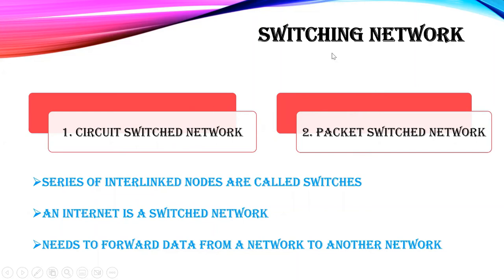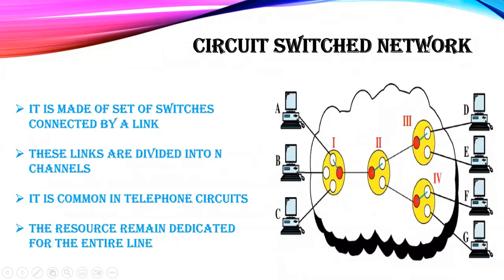In a circuit switched network, two ends of the system are connected through a circuit. There are four switches forming a node, which is further divided into different channels. The best example of a circuit switched network is the telephone network — a telephone hub connects n number of houses, and communication is delivered from one end through the hub to the other end of the channel.